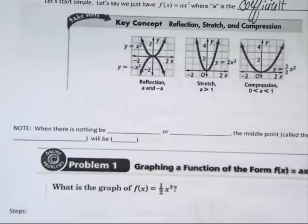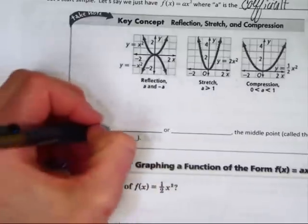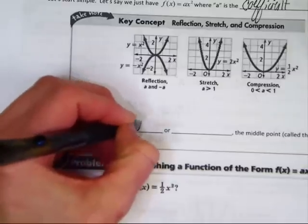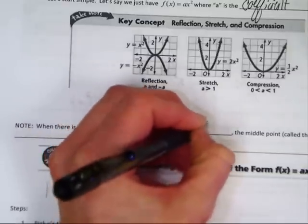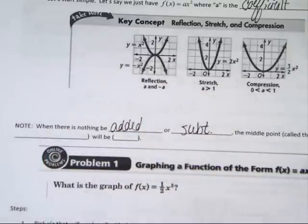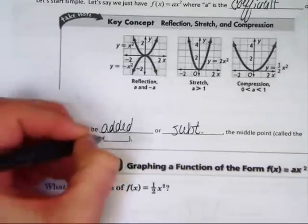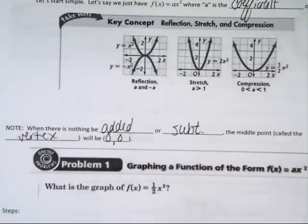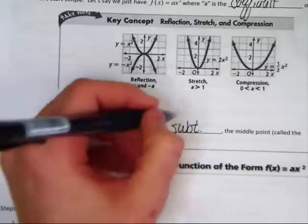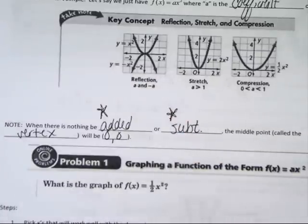Note. When there is nothing being added or subtracted, the middle point, which is called the vertex, will be 0, 0. And that's only when nothing is being added or subtracted. If I were you, if you're making flashcards as you move along, I would put that on the front of a flashcard, so on the back you know what the vertex is automatically.